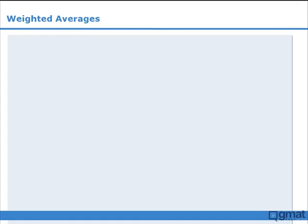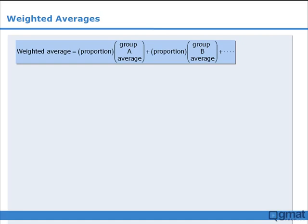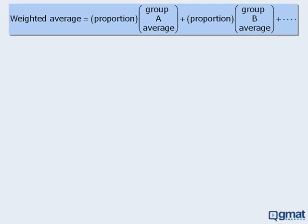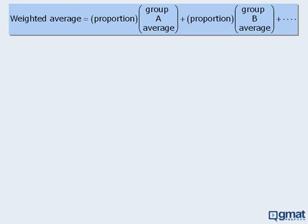We can now take these results and generalize them. If we are combining two or more groups where we know the average of each individual group, then to find the weighted average of the combined population, we take the proportional representation of one group — say group A — and multiply it by the average of that group. Then we do the same for another group, and so on.